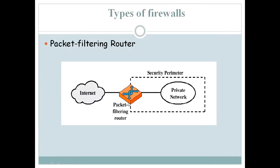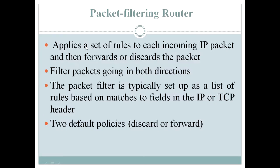The types of firewalls: first, the packet filtering router. You have the internet on one side and a private network on the other. This packet filtering router applies a set of rules to each incoming packet and then forwards or discards it depending on those rules. Packets are filtered in both directions. The packet filter is set up as a list of rules matching fields in the IP or TCP header, with two default policies: discard or forward.